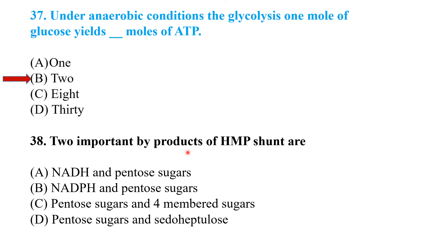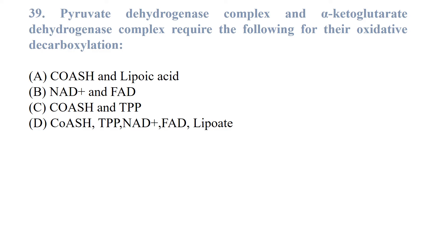Two important byproducts of the hexose monophosphate pathway (HMP shunt) are NADPH and pentose sugars. Pyruvate dehydrogenase complex and alpha-ketoglutarate dehydrogenase complex require coenzyme A, TPP, NAD, FAD, and lipoate for oxidative decarboxylation.